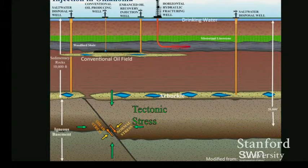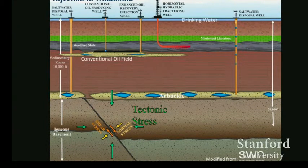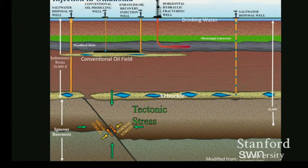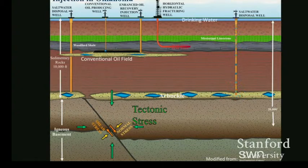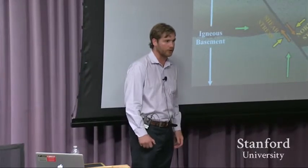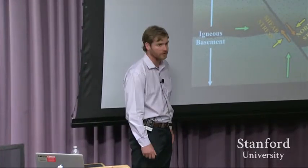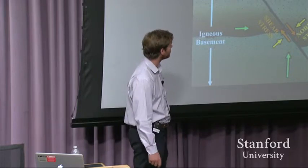What can account for it is wells we call saltwater disposal wells. They are disposing of industrially produced water, often from oil and gas, into a rock formation — a sandstone called the Arbuckle Formation. There are over 100,000 of these saltwater disposal wells operating in the US, and the vast majority of them are completely safe.